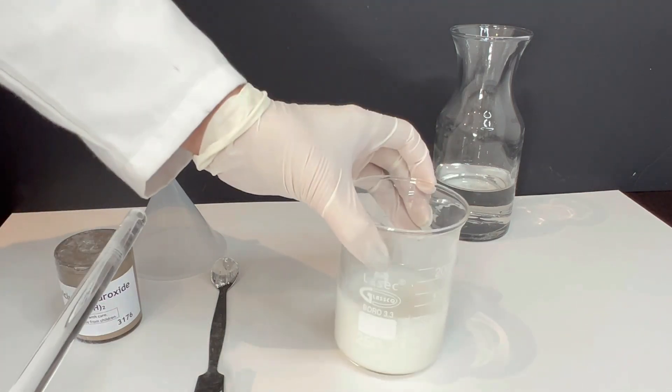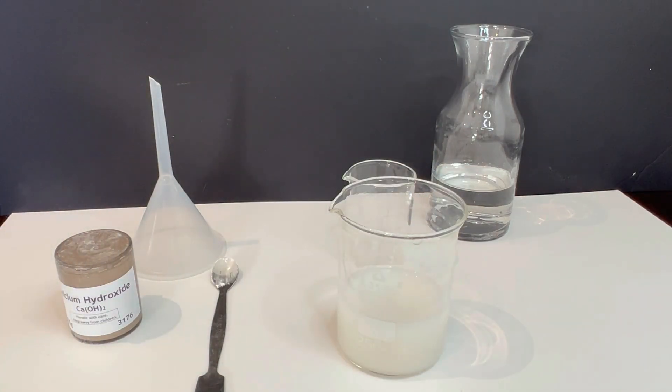Now here's something important to understand. Calcium hydroxide is only slightly soluble in water. This means some of it will dissolve, but the rest will stay as a solid at the bottom of the beaker. What we are creating is a saturated solution where no more solute can dissolve.